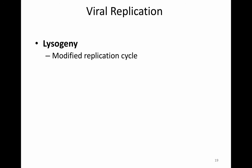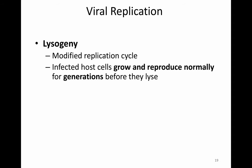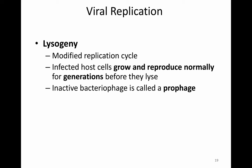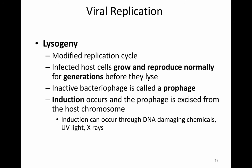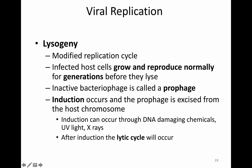The lysogenic cycle, or lysogeny, is a modified lytic cycle. What happens is the infected host bacteria will actually grow and reproduce normally for many generations before they lyse. There is an inactivated bacteriophage called a prophage that is actually inserted into the chromosome of the bacteria, and the bacteria replicates along with the prophage for many generations. Induction occurs and the prophage is cut out from the host chromosome, then activates and enters into the lytic cycle. Induction is caused by DNA-damaging events such as chemicals, UV light, or x-rays, or by suboptimal conditions the bacteria is experiencing. After induction, the lytic cycle will occur.